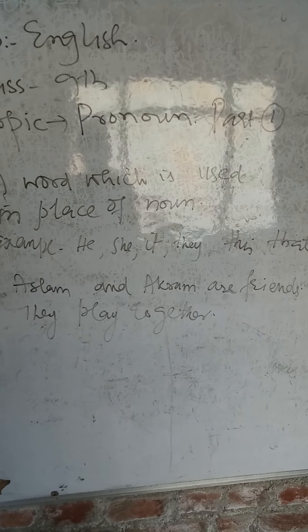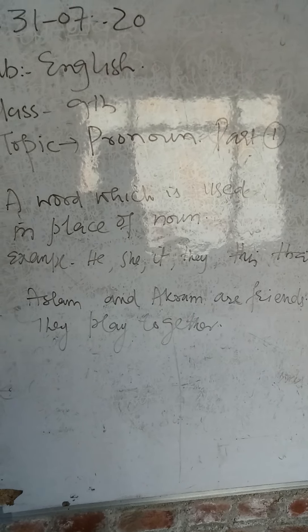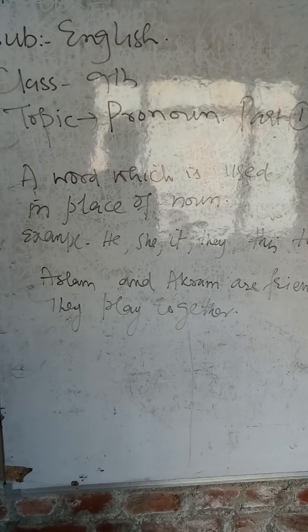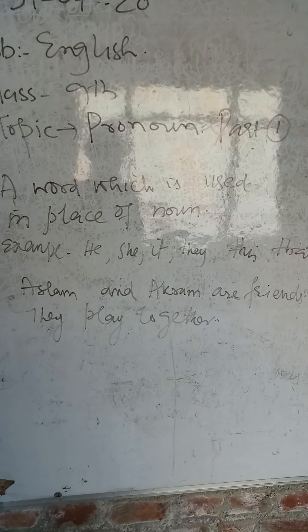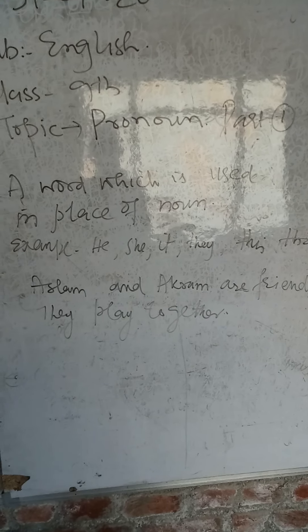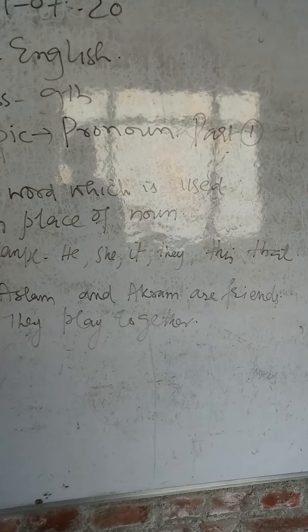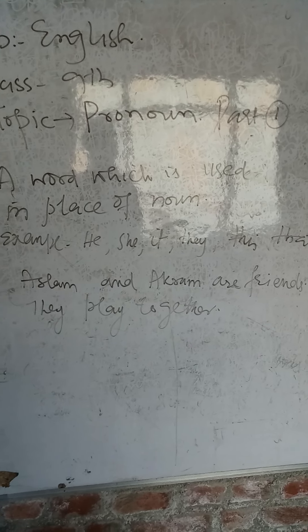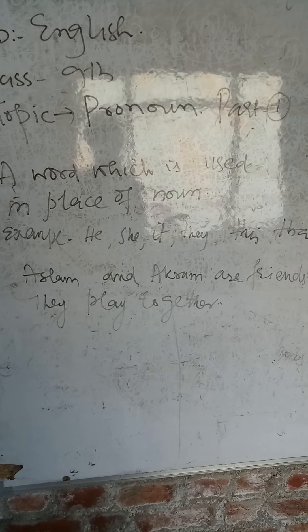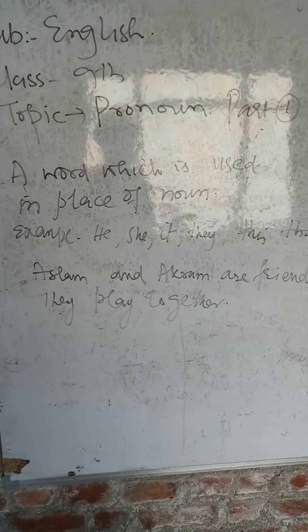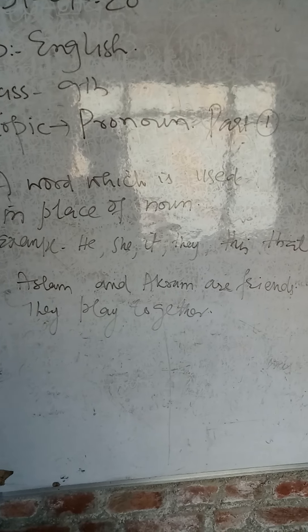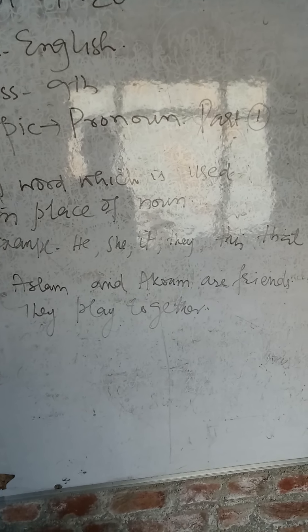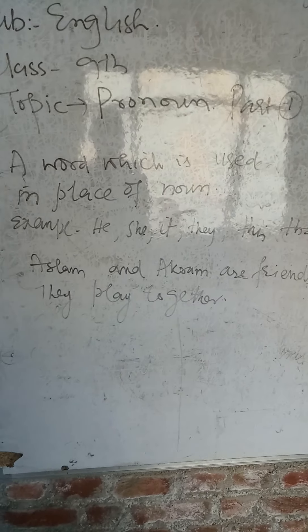For example: 'Aslam and Akram are friends.' This is the first sentence. Now if we are writing a paragraph, we do not repeat 'Aslam and Akram' in the second sentence. Instead, we use 'They'. So the second sentence becomes: 'They play together.' Instead of repeating 'Aslam and Akram', we use 'They'.